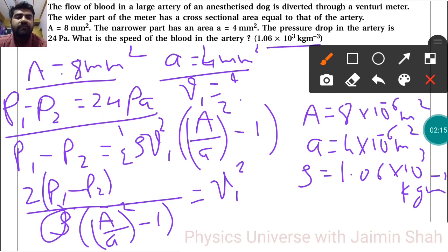By putting all the values we will get V1 squared, and then after taking the square root of the whole equation we will get V1, which is the speed of the blood in the artery.